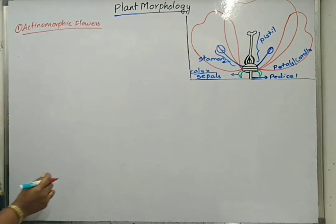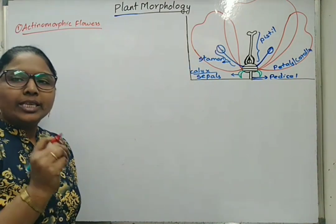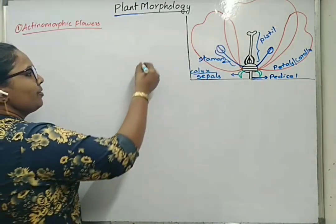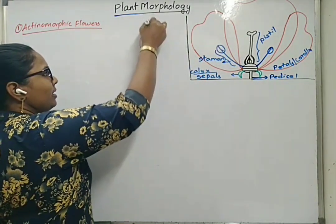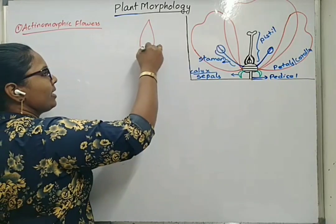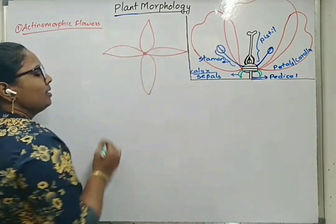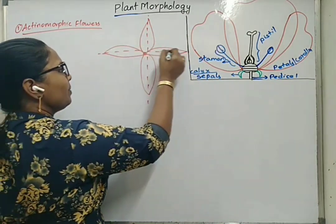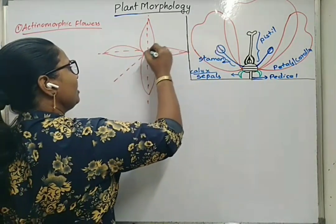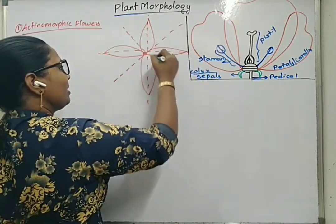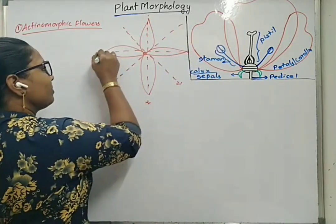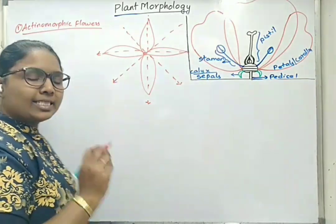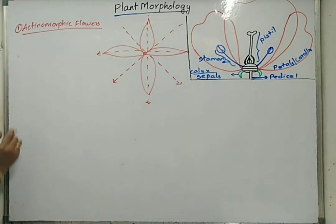These are the flowers that obtain two equal parts when we cut in any plane of the flower. For suppose, this is the main central axis, it has given rise to petals like this. If we cut in this plane, or if we cut in this plane, or if we cut in this plane — if we cut the flower in any plane, then we must get two equal halves. Such types of flowers are called actinomorphic.